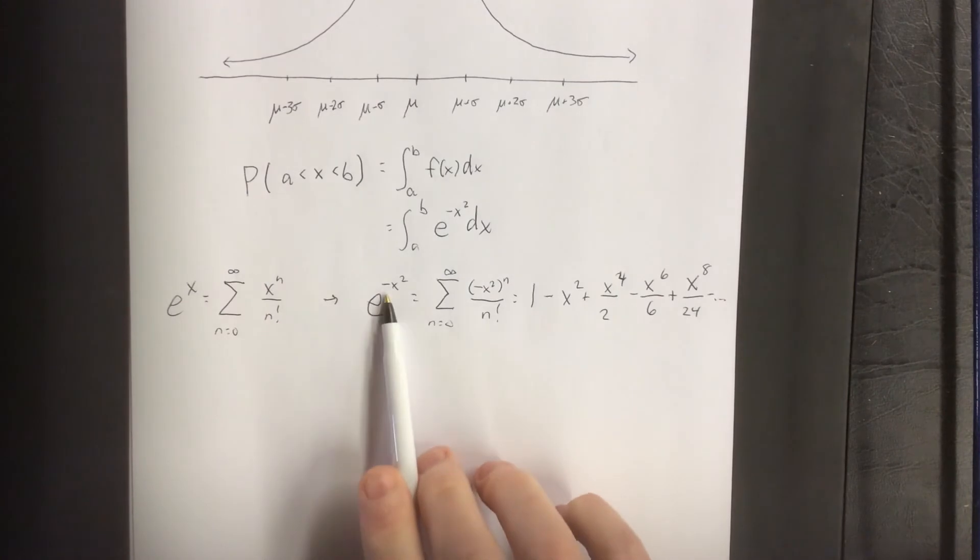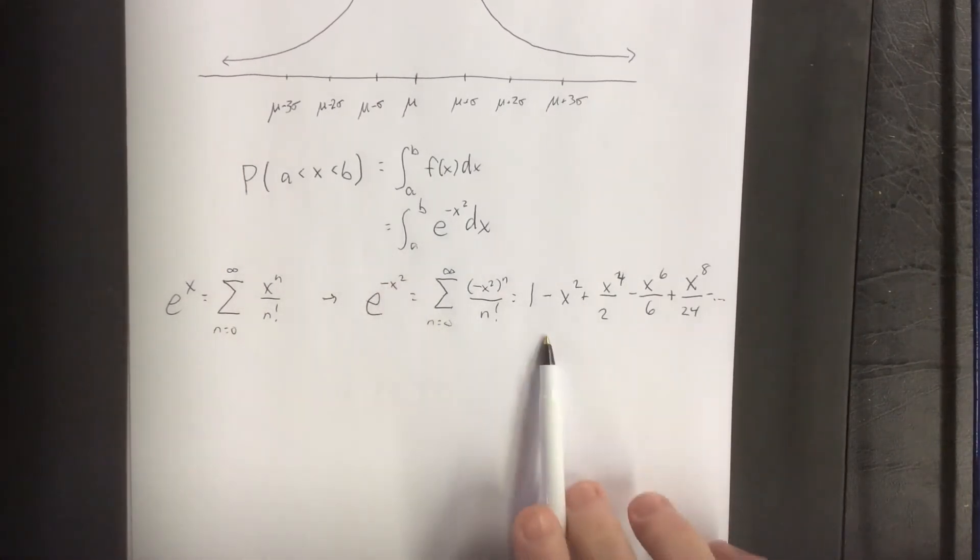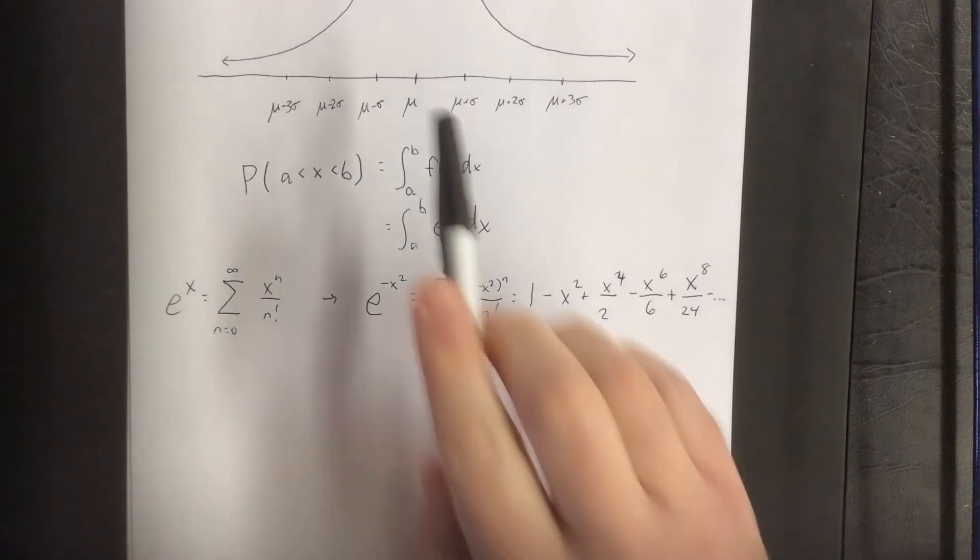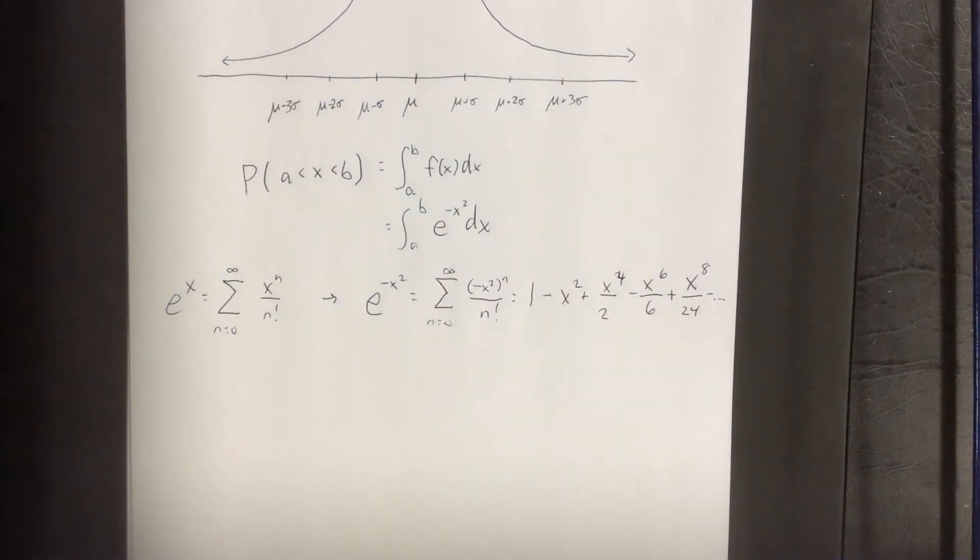By expressing e to the negative x squared in terms of a polynomial, all of a sudden integrating this polynomial is a piece of cake. There are gigantic statistical tables associated with certain numbers that are along here being associated with certain probabilities, and all of those probabilities are accurate to four decimal places.